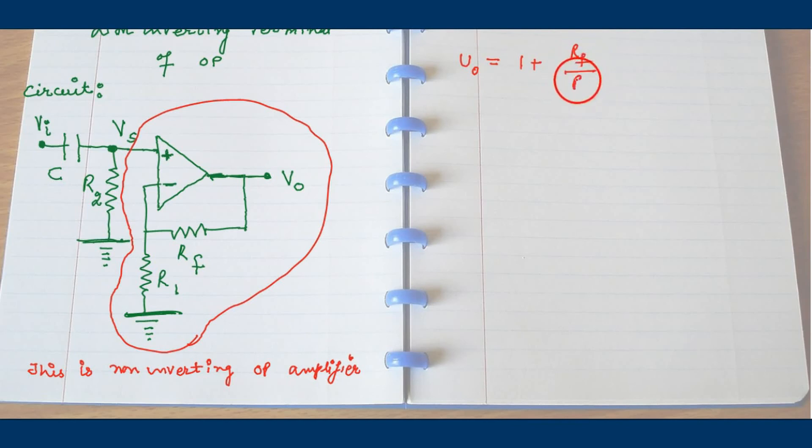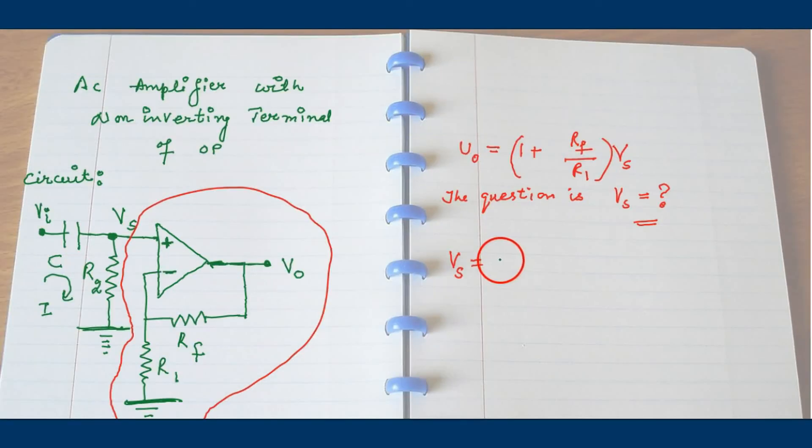We know the result of the non-inverting op-amp. It is 1 plus RF upon R1 into Vs. The question is what is Vs? It is already explained in inverting op-amp, the relation between Vs and VI. Just go back. That was the expression derived there. Now substituting this value of Vs, V0 becomes this expression.